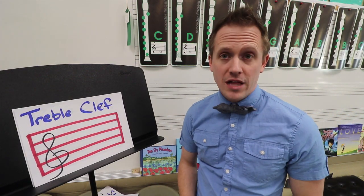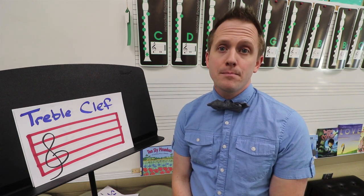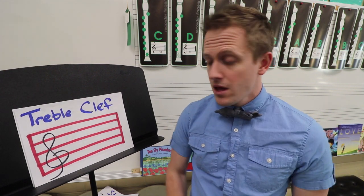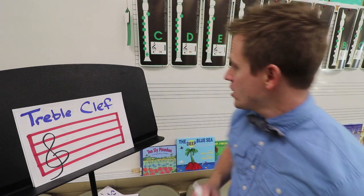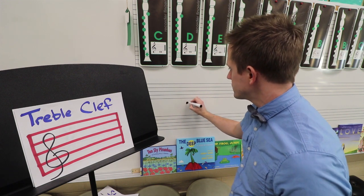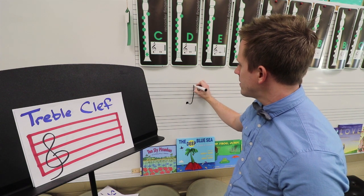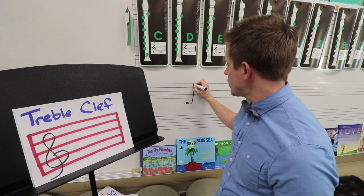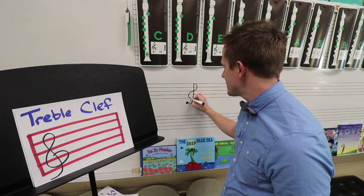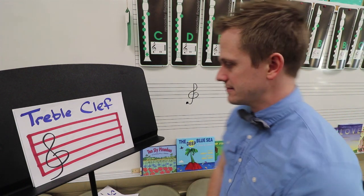The next one is a treble clef. Treble clefs mean that you are going to be using mostly high pitches. Treble clefs are kind of difficult to draw — I'm going to try and help you. Start at the bottom of your staff and maybe even put a dot down there. You're going to go kind of down and up like this. Once you get to the top, you're going to move to the right and then to the left, and swirl it back over. I told you it wasn't easy.